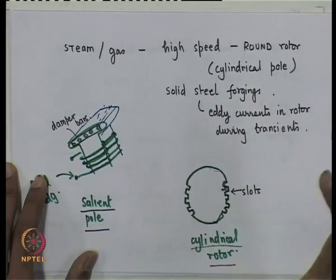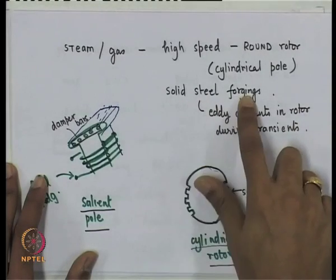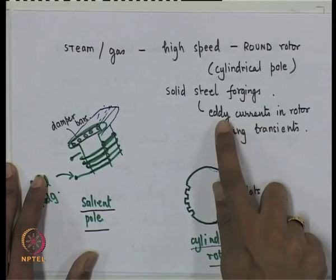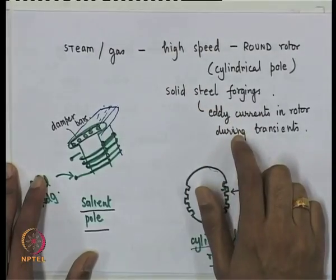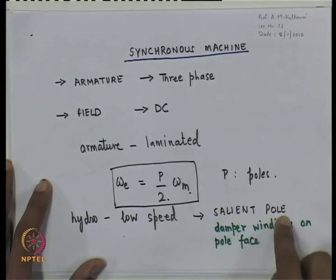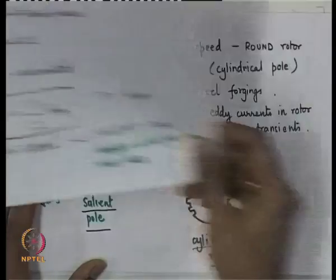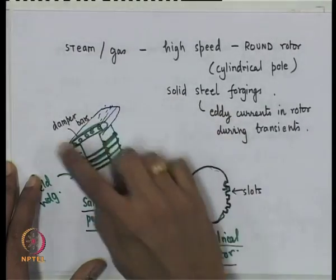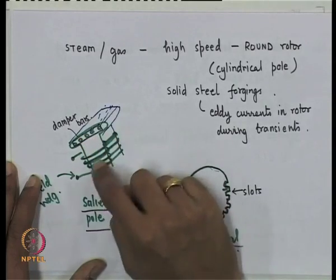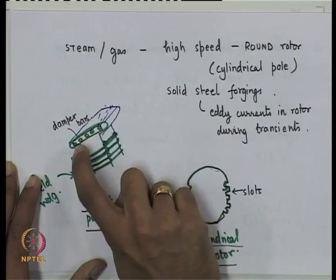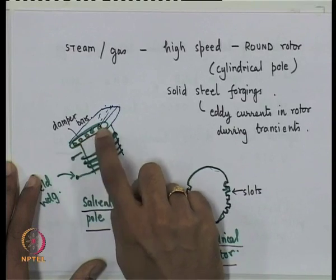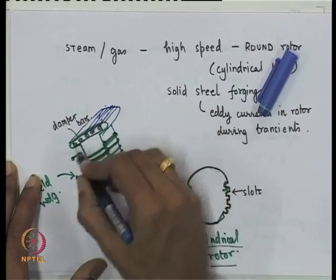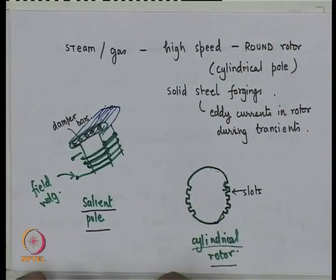In a low speed salient pole turbine machine, the pole faces are laminated. On a hydraulic turbine pole face, the field winding is housed on the pole and damper bars are embedded on the pole face, short-circuited at the ends — basically like a cage on an induction machine.